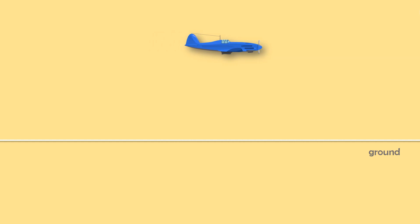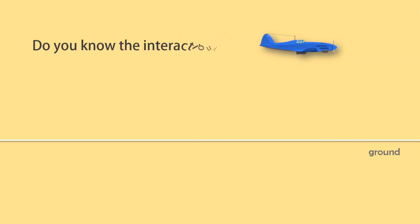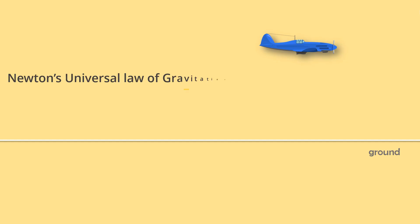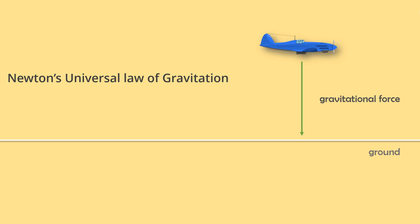Now let me give you another quick example. If an aeroplane is moving at a certain height above the ground, do you know that there is interaction between the aeroplane and the ground? Well, the answer is yes. According to Newton's universal law of gravitation, there is a gravitational force between the aeroplane and the ground. Thus the aeroplane interacts with the ground, but they are in no direct contact. Hence, there is a gravitational force between the ground and the aeroplane, and this gravitational force is known as a non-contact force.